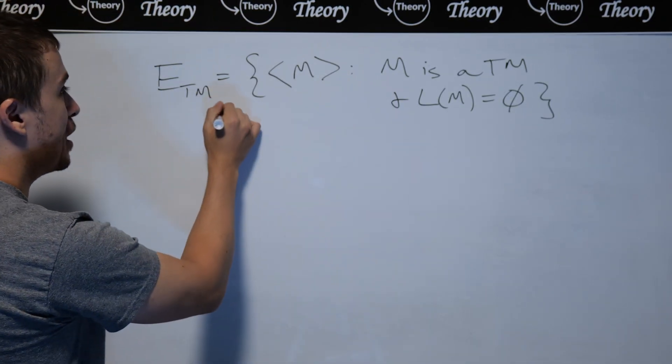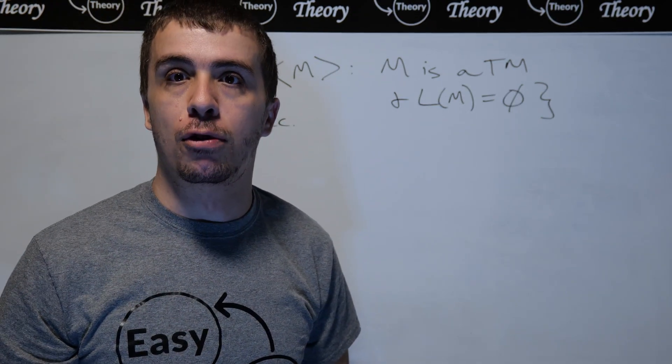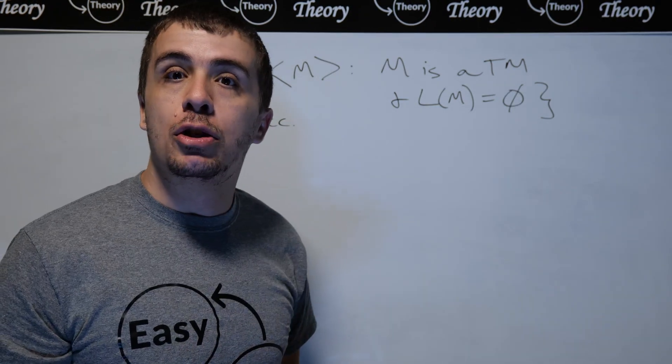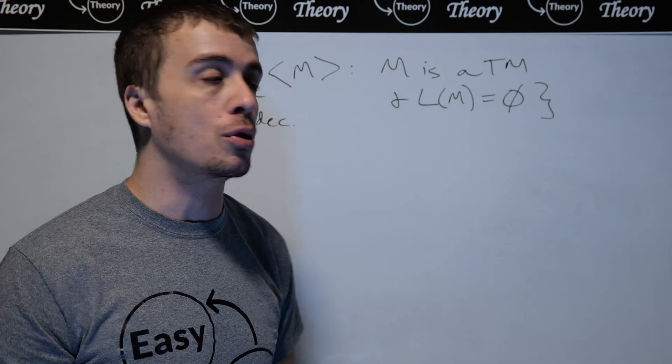And famously, it's an undecidable problem because we can just reduce from the acceptance problem for Turing machines. What I want to do here is to apply Rice's theorem to this language to get a much easier proof.